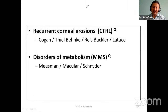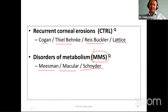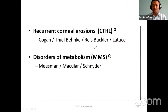Recurrent corneal erosion is seen in CTRL — Cogan's, Thiel-Behnke, Reis-Bücklers, and lattice dystrophy. Disorder of subepithelial metabolism is seen in MMS — Meesman, macular, and Seedner dystrophy.